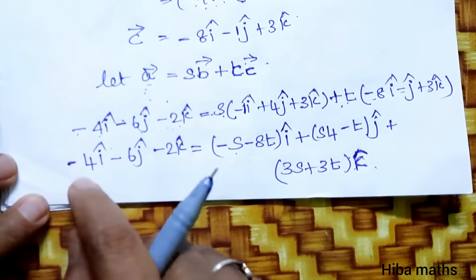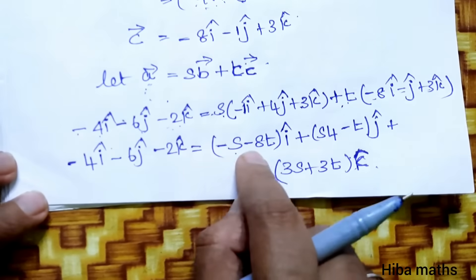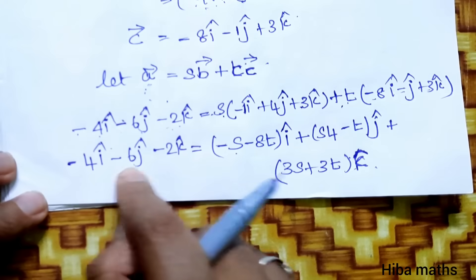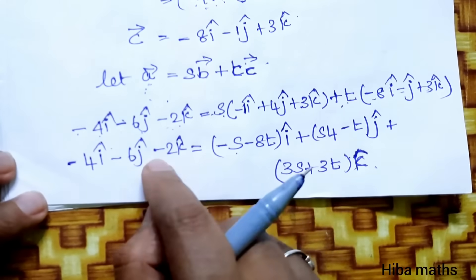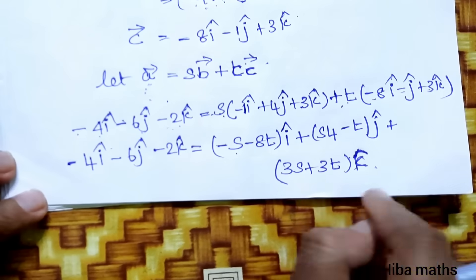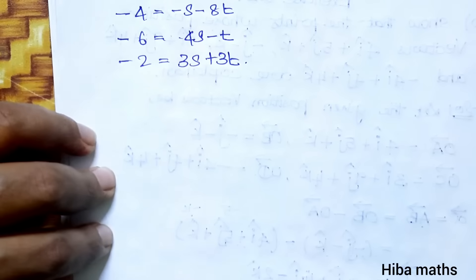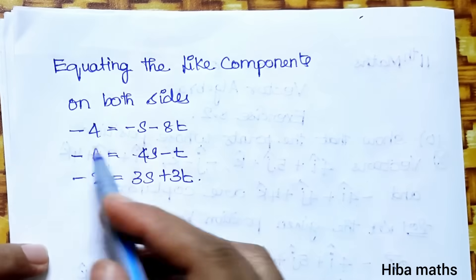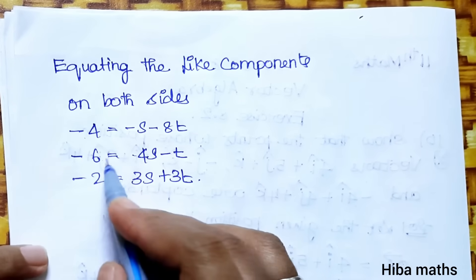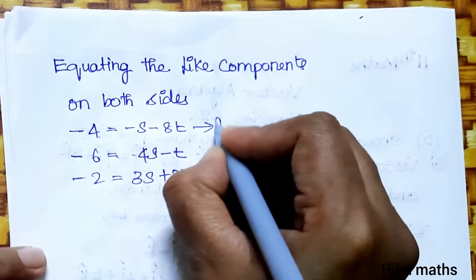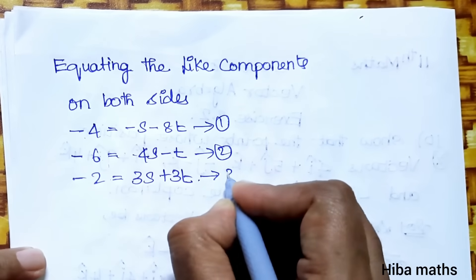Equating like components on both sides gives three equations: equation 1 (i-component): -4 = -s - 8t; equation 2 (j-component): -6 = 4s - t; equation 3 (k-component): -2 = 3s + 3t. We need to solve equations 1 and 2 to find s and t.